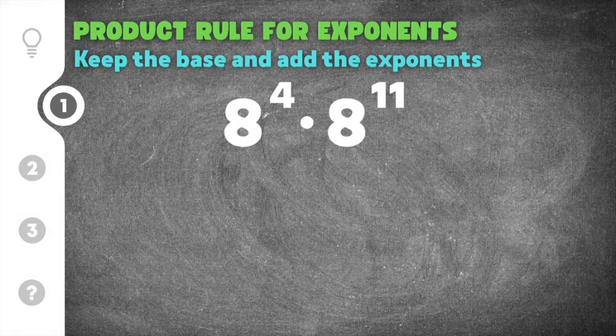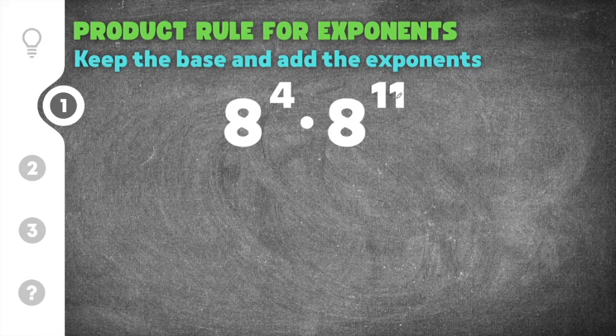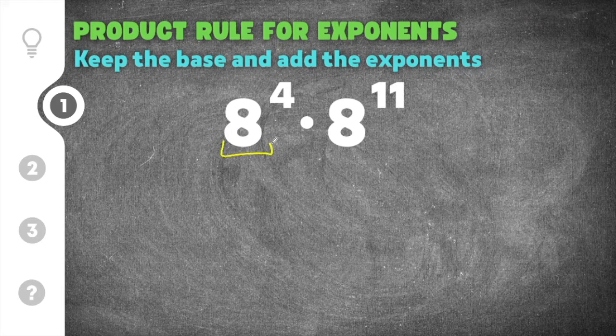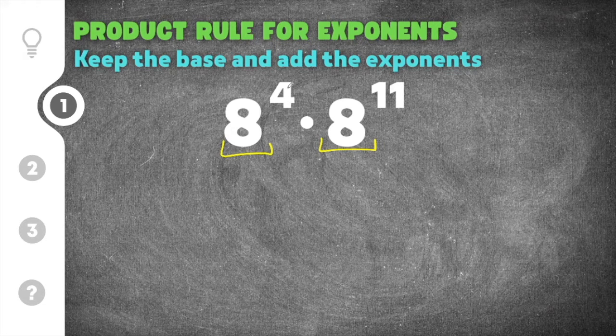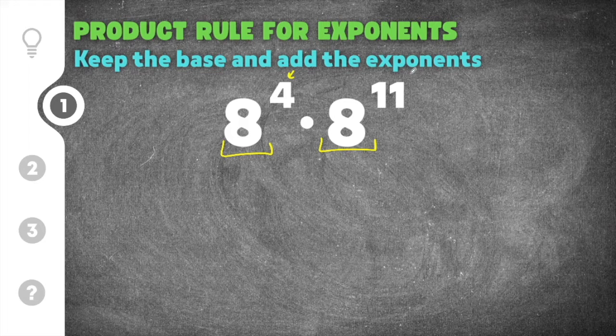This problem gives us 8 to the fourth times 8 to the eleventh. You can see our base is eight, so that base is going to stay the same, and then our exponents are four and eleven and those will be added together.